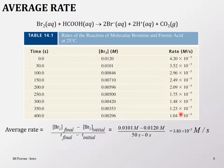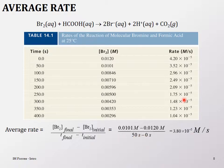By the time you get to later points, the reactants are very few because you've started forming product, so the rate is very slow. If you calculate from zero to 50 and from 350 to 400, you will see a slight difference in the rate of reaction. Obviously, initially it should be much faster than at the end.